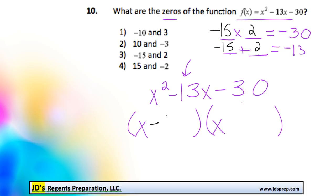That means one will be x minus 15, and the other factored will be x plus 2.